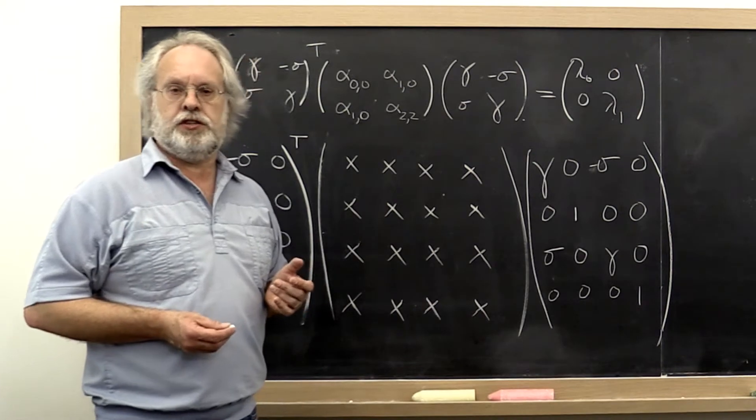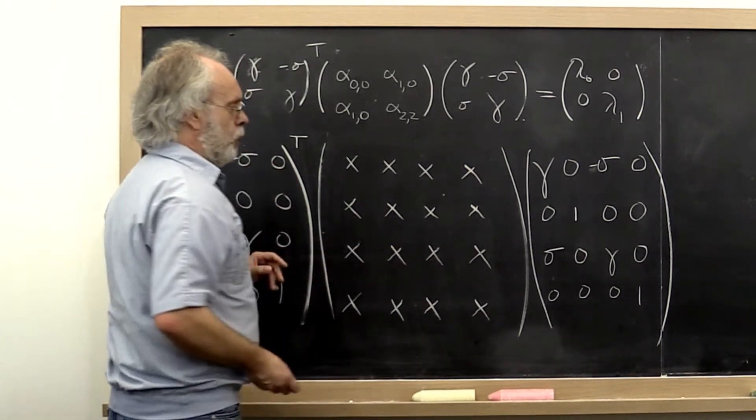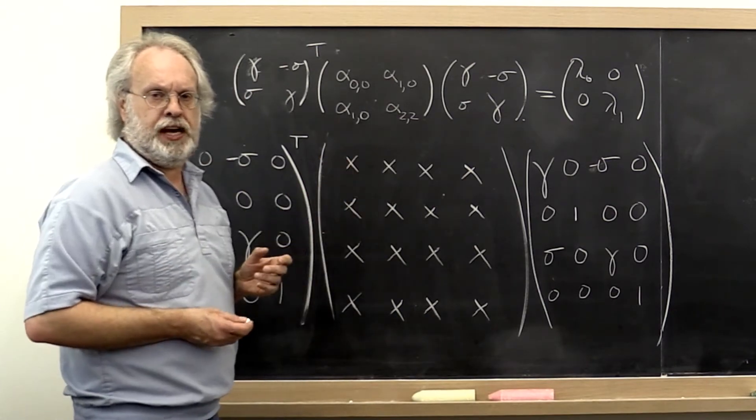Let's have a look at how we can leverage Jacobi rotations. Here we have a 4x4 matrix, but it should be pretty easy to see how this extends.